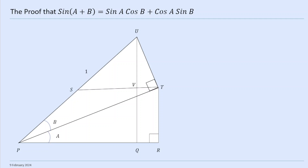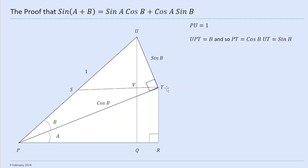This is the diagram we're going to use. As ever with these geometrical trigonometric proofs, the key is to get the right diagram. So some key ideas here: we've got an angle a and an angle b, and PU is going to be one. So PU is one, this angle is b, so this is cos(b) and this is sin(b).